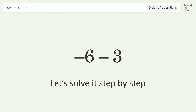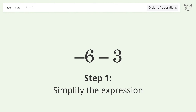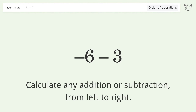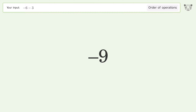Simplify the expression by calculating any addition or subtraction from left to right. Negative six minus three equals negative nine. And so the final result is negative nine.